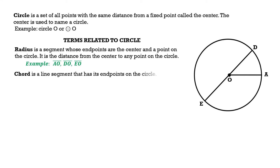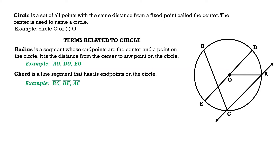Next, let's move to chord. A chord is a line segment that has its endpoints on the circle. For example, we have line segment BC, line segment DE, and line segment AC. Line segment BC goes from point B, which is a point on the circle, to point C, which is also a point on the circle. So line segment BC is an example of a chord.